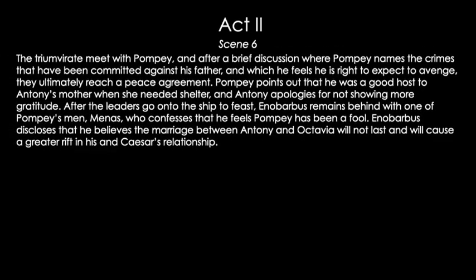Scene 6. The triumvirate meet with Pompey. After a brief discussion where Pompey names the crimes committed against his father — which he feels he has a right to avenge — they ultimately reach a peace agreement. Pompey points out he was a good host to Antony's mother when she needed shelter, and Antony apologizes for not showing more gratitude. Antony also points out that while Pompey may have an advantage by sea, their forces outmatch him by land, and Pompey notes they only have what they stole and it can just as easily be stolen back.